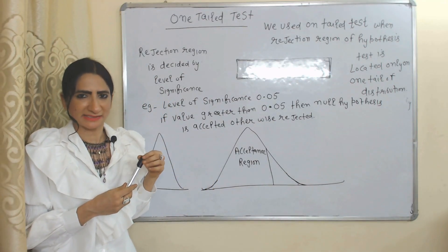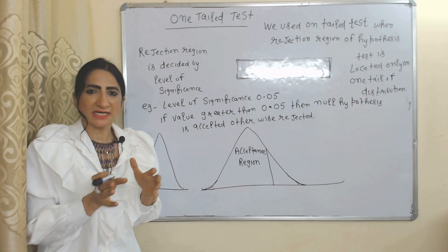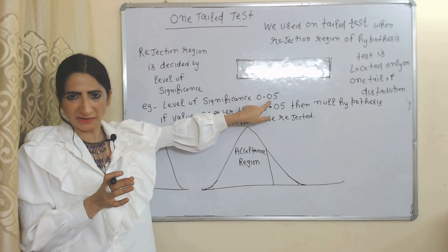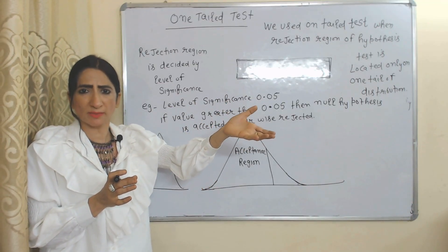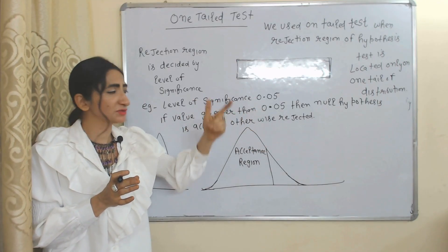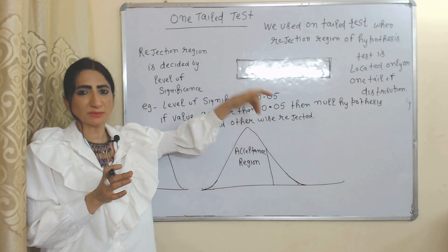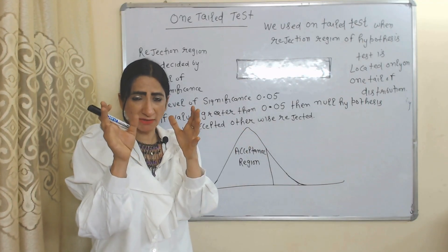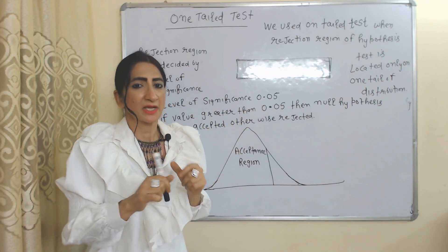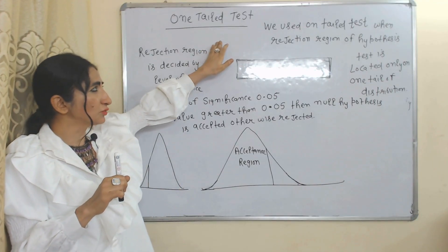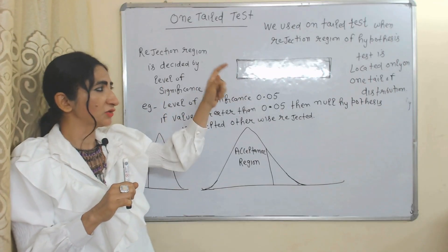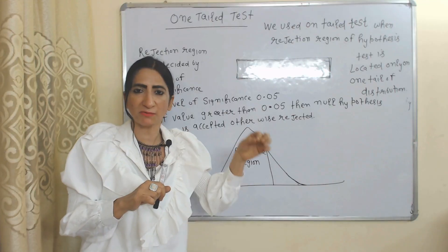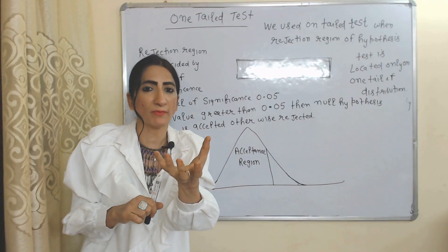One-tailed test: first, what is a rejection region? The rejection region depends on the level of significance. With level of significance 0.05, in order to verify our hypothesis we apply tests. If our value is more than 0.05 we accept the null hypothesis, otherwise we reject it. We use a one-tailed test when our rejection region is located only on one tail of the distribution.